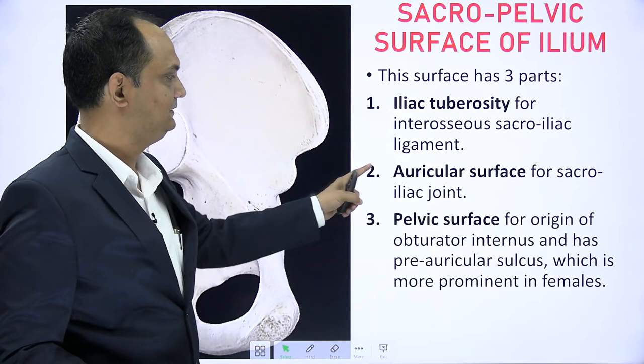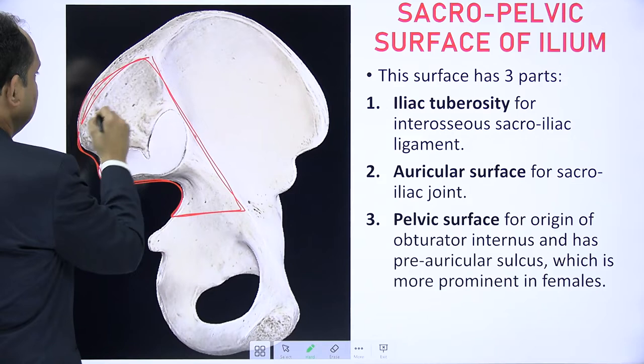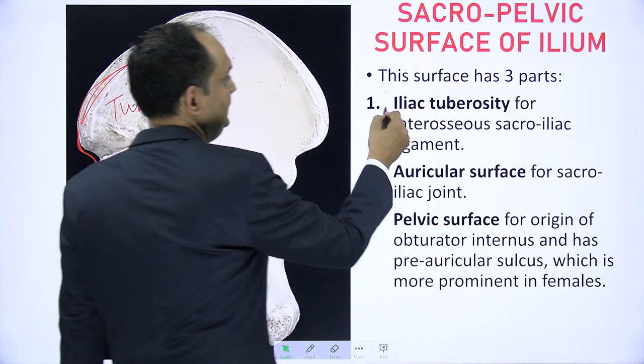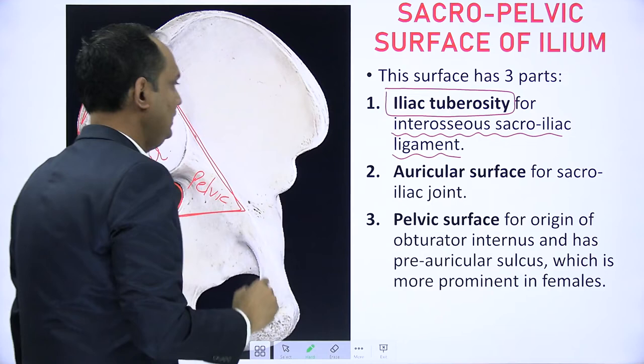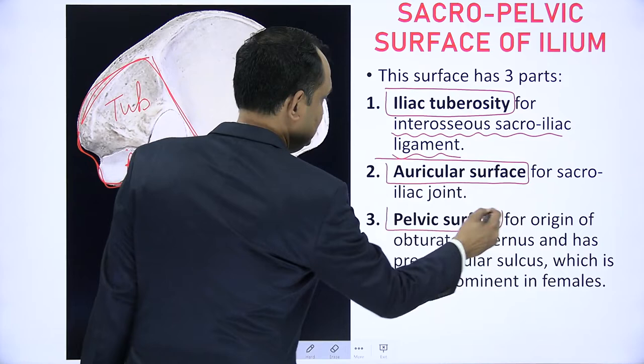The sacro-pelvic surface is divided into three parts: the tuberosity, the auricular area, and the pelvic area. This is your sacro-pelvic surface. In it, you have the tuberosity. You have the auricular area and the pelvic area. The tuberosity of ilium is known as iliac tuberosity, which has the interosseous sacro-iliac ligament. The articular or auricular area is ear-shaped. This auricular area forms the synovial sacro-iliac joint.